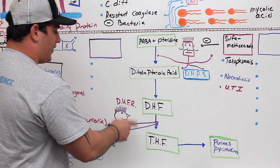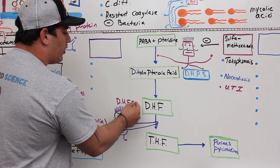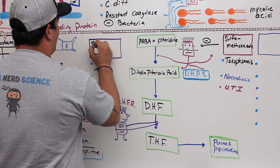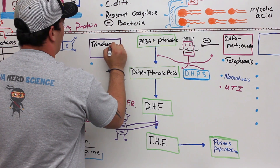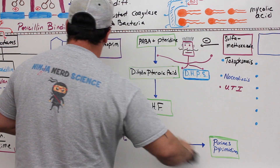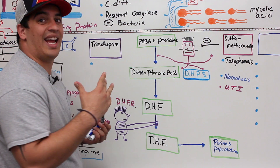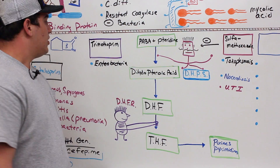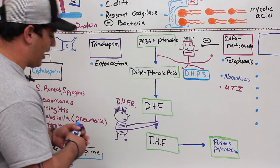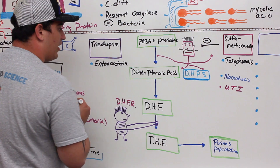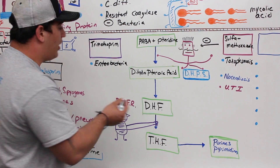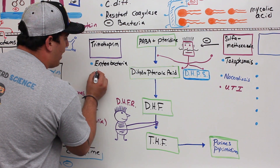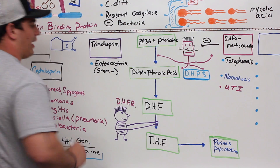There's another drug targeting the dihydrofolate reductase enzyme. That drug is called trimethoprim. Trimethoprim is usually only good at treating certain types of enterobacteria — a type of gram-negative bacteria that is naturally part of our gut flora, but can cause gastrointestinal tract infections if it causes damage.